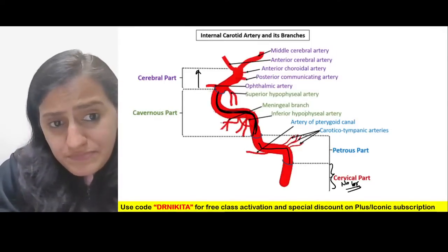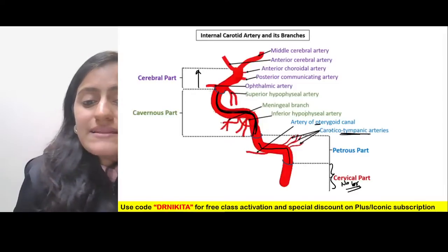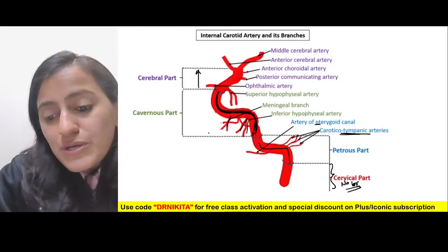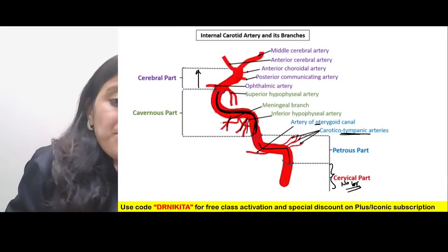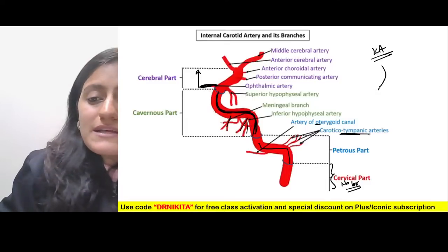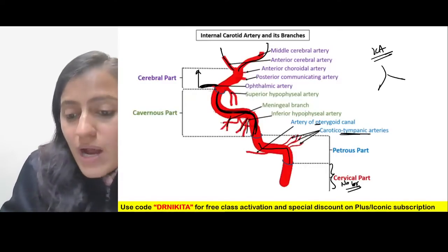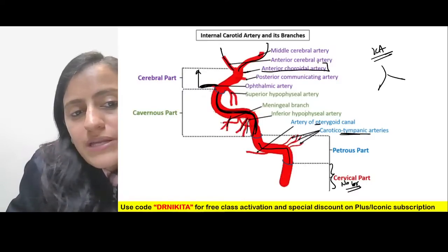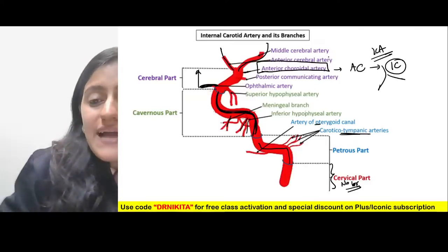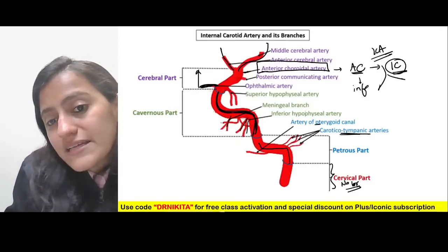The cervical part gives no branch — very important. From the petrous part come the artery of pterygoid canal and the caroticotympanic artery. From the cavernous part come the inferolateral trunk and the meningo-hypophysial trunk. In the cerebral part, the first and very important branch is the ophthalmic artery. The terminal branches of ICA are the anterior cerebral artery (ACA) and middle cerebral artery (MCA). Just before terminating, ICA gives the anterior choroidal artery — very important.